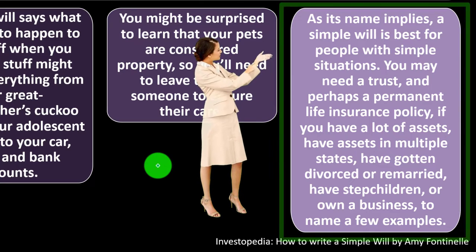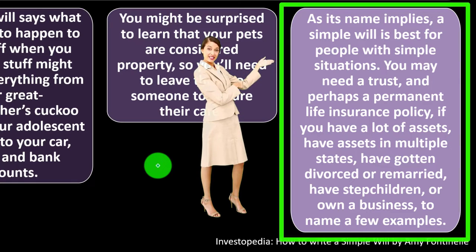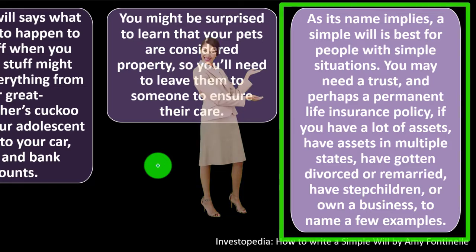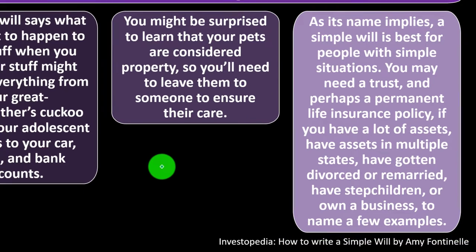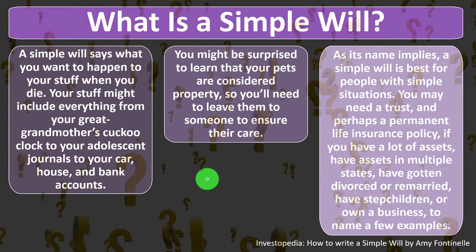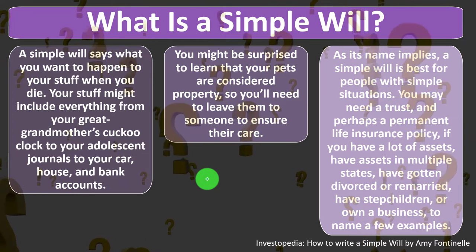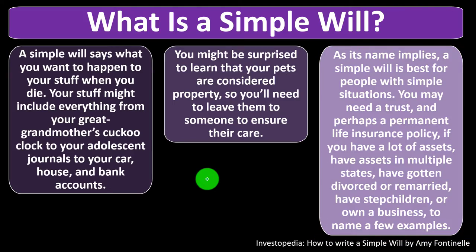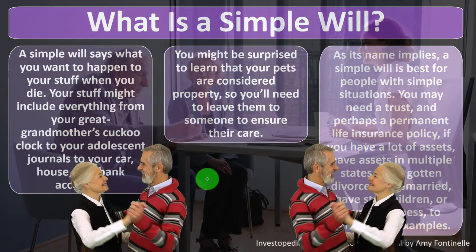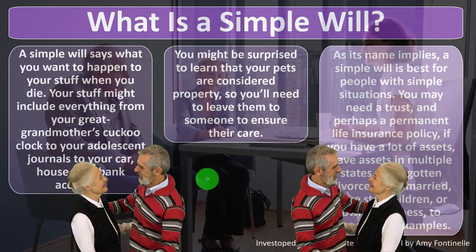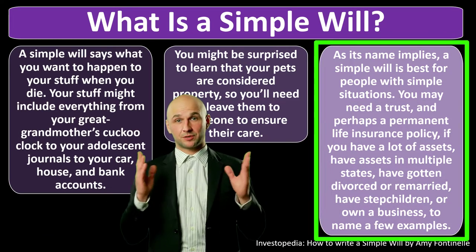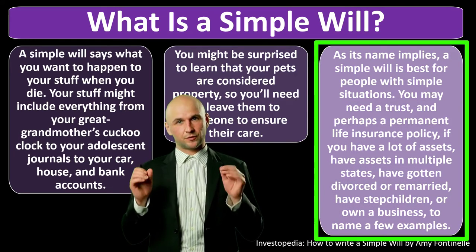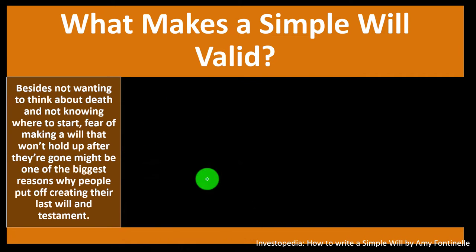As its name implies, a simple will is best for people with simple situations. You may need a trust and perhaps a permanent life insurance policy if you have a lot of assets, have assets in multiple states, have gotten divorced or remarried, have stepchildren, or own a business — to name a few examples. As assets grow or complexity increases, estate planning becomes more important, especially if assets are large enough to be subject to estate taxes.